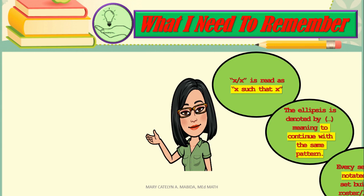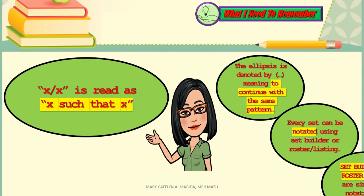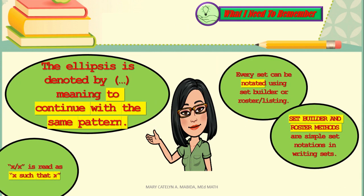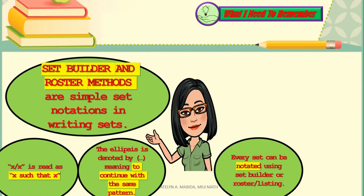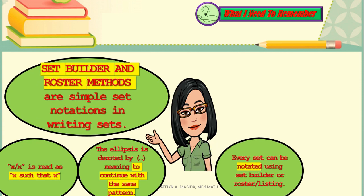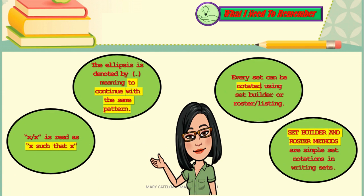Now, here are what you need to remember. The ellipsis is denoted by three dots, meaning to continue with the same pattern. Every set can be notated using set builder or roster or listing method. Set builder and roster methods are simple set notations in a writing sense. And there you have it. Four important concepts in this video.